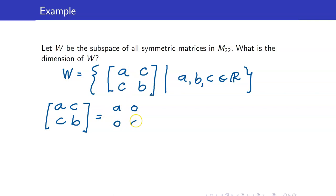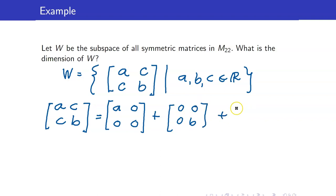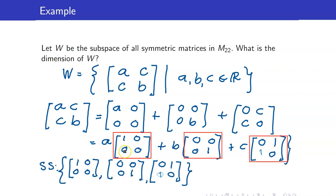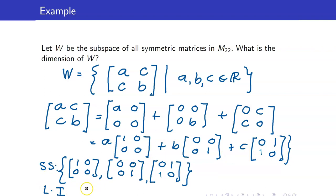Separating all constants, we get: A·[[1,0],[0,0]] + B·[[0,0],[0,1]] + C·[[0,1],[1,0]]. So a spanning set would be these three matrices. I leave it as an exercise to show that this is linearly independent. Therefore, the dimension of W is equal to 3.